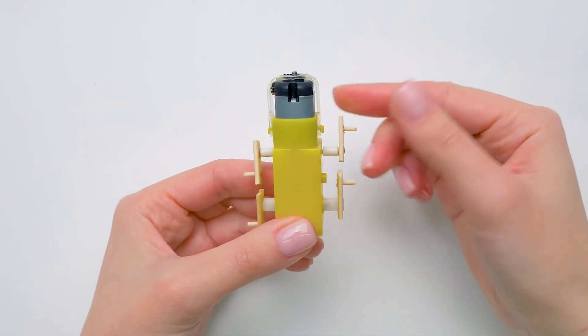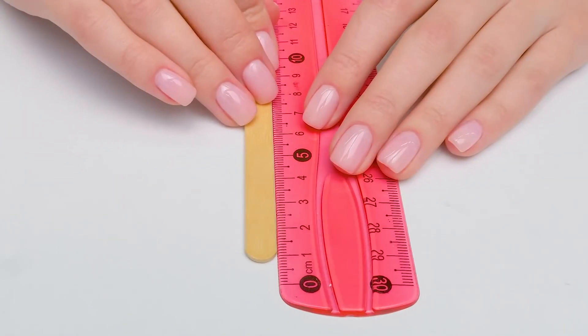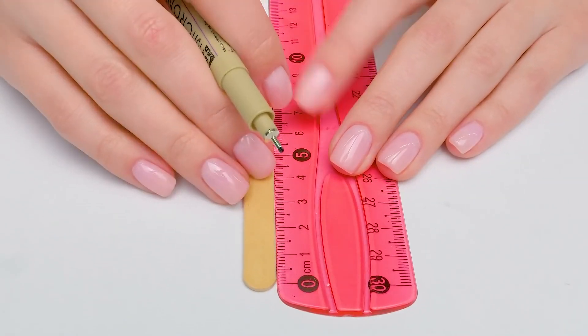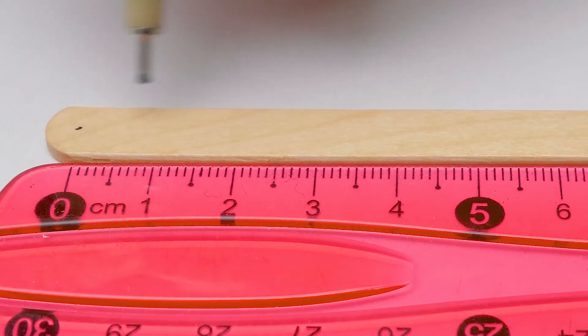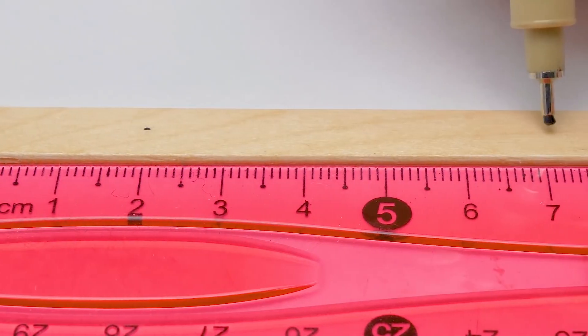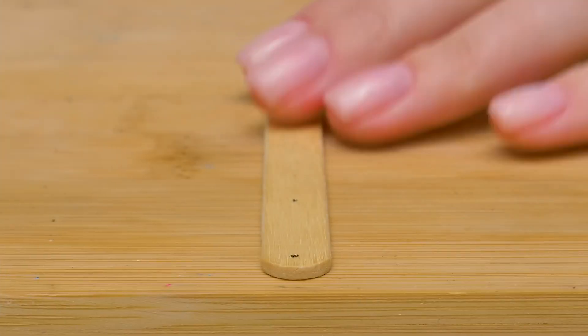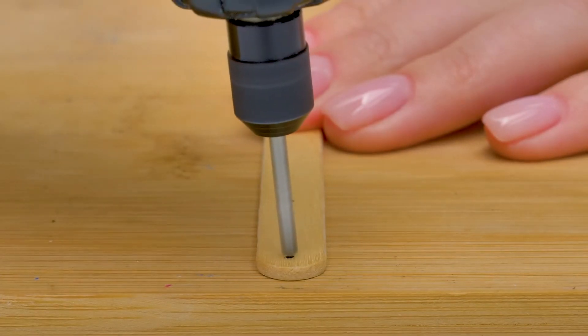I've already secured the sticks with glue. We can proceed. The legs of our robot are going to be long. Seven centimeters from the upper hole to the lower edge. The remaining part will just cut. The robot will need comfortable shoes.